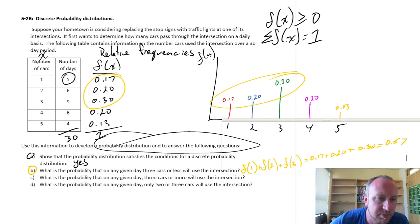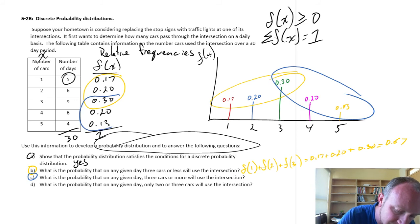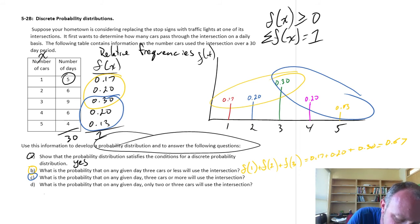Okay, let's go on to part C. What is the probability that on any given day, three cars or more use the intersection? So, now we're just going to look at these probabilities. Or, similarly, in our table over here, we're going to look at these probabilities. I'm running out of room. Let's come down here for part C.